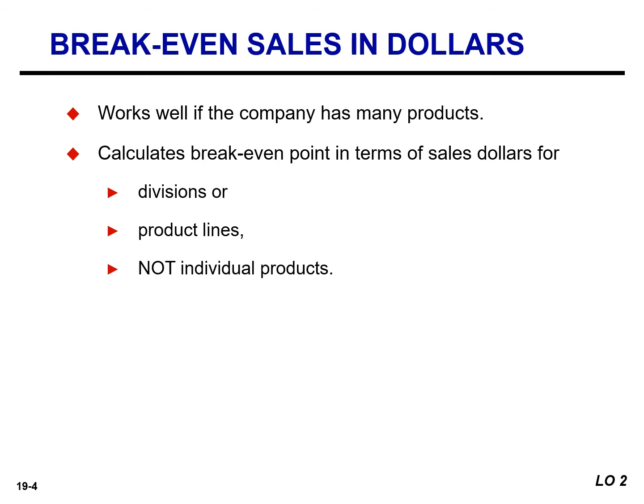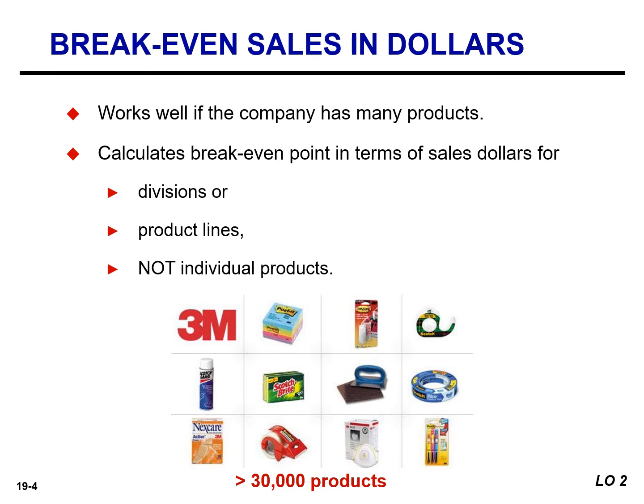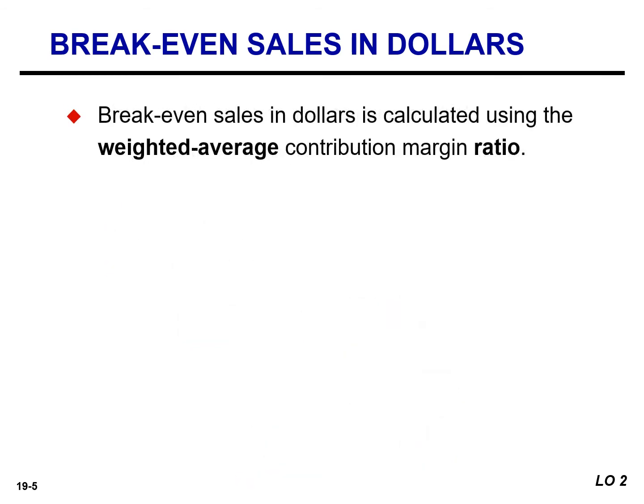This calculation works well if a company has only a small number of products. Consider 3M, the maker of Post-it notes, which has more than 30,000 products. To calculate the break-even point for 3M using a weighted average unit contribution margin, we would need to calculate 30,000 different unit contribution margins, and that's not realistic. For a company with many products, break-even sales in dollars is calculated using the weighted average contribution margin ratio.